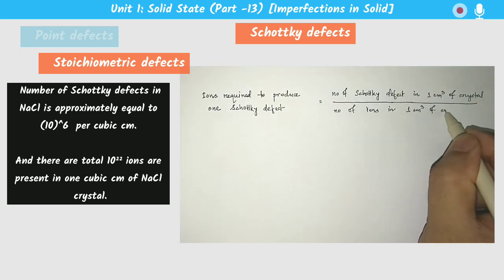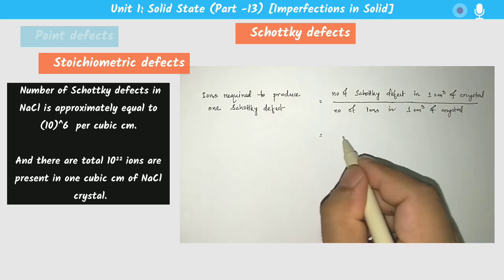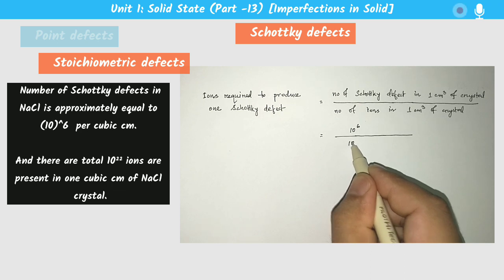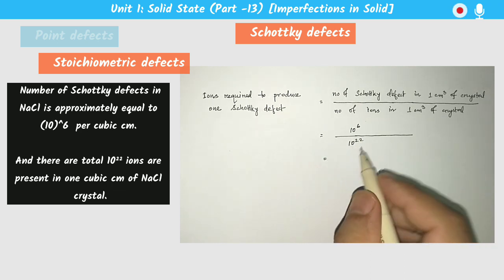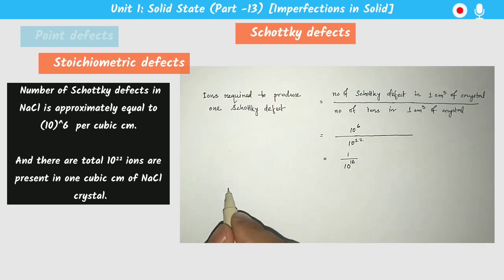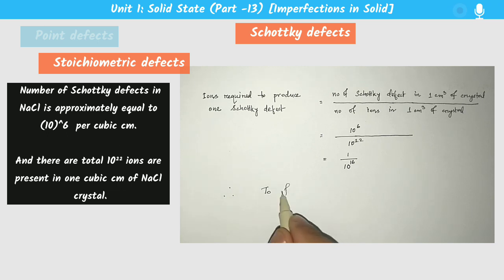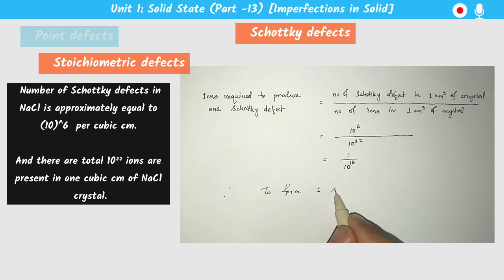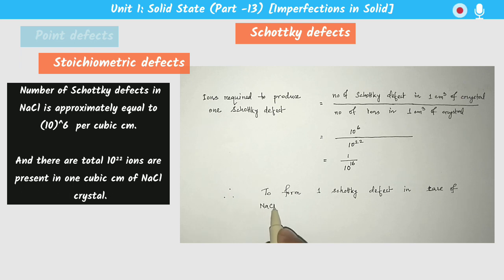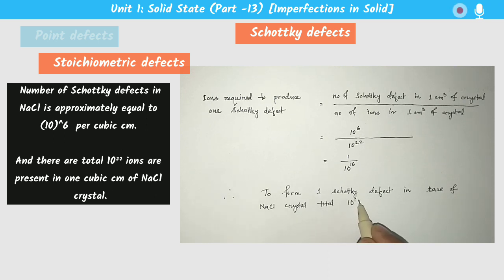We can also calculate the number of ions required to produce one Schottky defect. To do this, divide the number of Schottky defects in one centimeter cube of the crystal by the number of ions present in one centimeter cube. The number of Schottky defects in 1 cm³ of NaCl is 10^6, and the number of ions is 10^22, so we get 10^6 divided by 10^22 equals 1 over 10^16. Therefore, 10^16 ions are required to produce one Schottky defect.